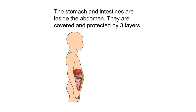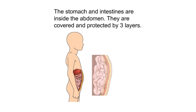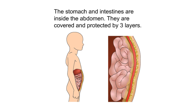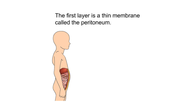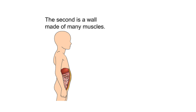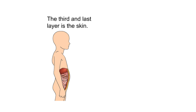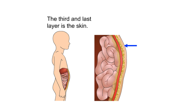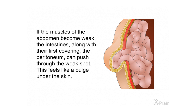Anatomy. The stomach and intestines help digest and absorb the food we eat. They are inside the abdomen and are covered and protected by three layers. The first layer is a thin membrane called the peritoneum. The second is a wall made of many muscles. The third and last layer is the skin.